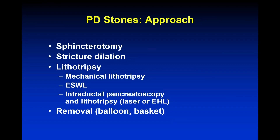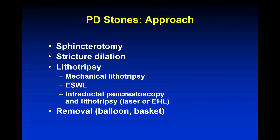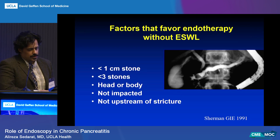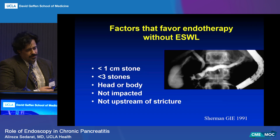The approach again involves a good sphincterotomy and opening strictures for larger stones or stones associated with strictures. Some kind of stone destruction may be necessary. Pancreatic duct stones are harder to destroy than bile duct stones, so lithotripsy of some sort is often needed. I often think a basket is a little better than a balloon because a balloon can sometimes push stone fragments into side branches. Smaller, less numerous, non-impacted stones can generally be removed without major lithotripsy maneuvers. When those features are not met, you have to think of lithotripsy.